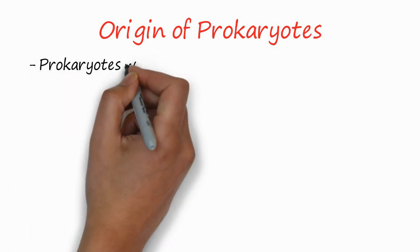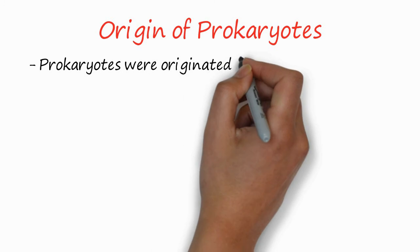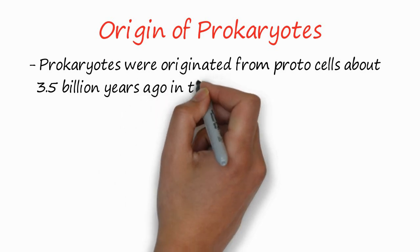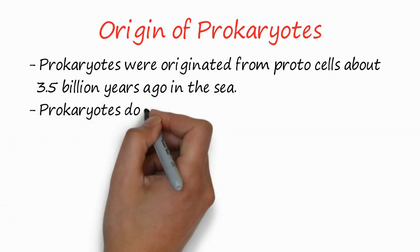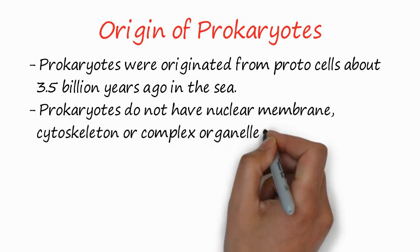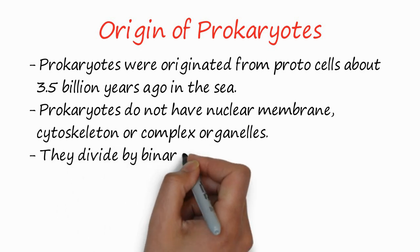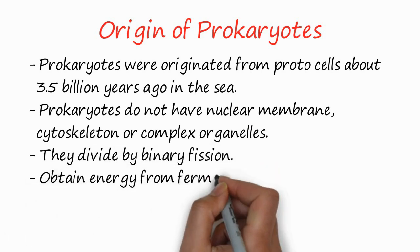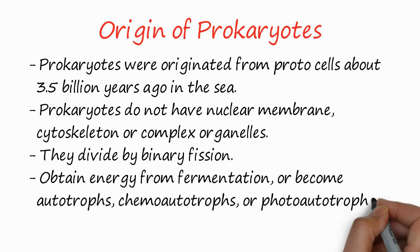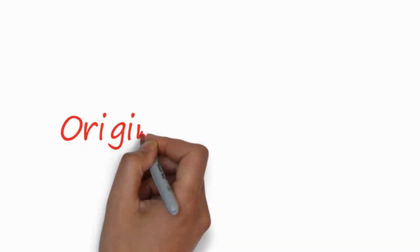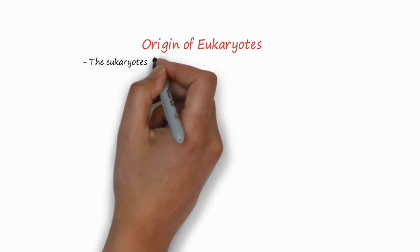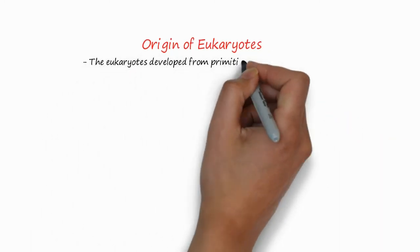How did prokaryotes originate? Prokaryotes were originated from protocells about 3.5 billion years ago in the sea. Prokaryotes do not have a nuclear membrane, cytoskeleton, or complex organelles. They divided by binary fission. They can obtain energy from fermentation or become autotrophic — chemotrophic or photoautotrophic — to become self-sufficient for their metabolism.